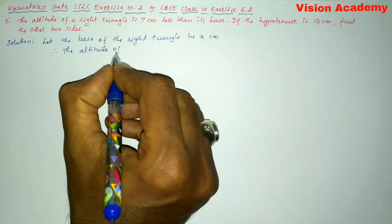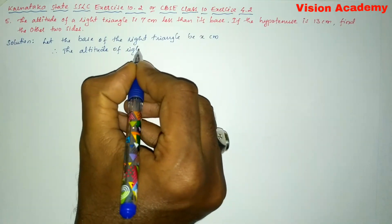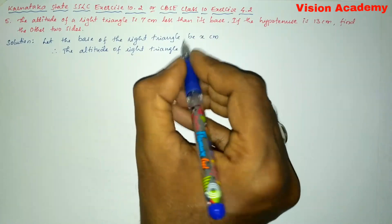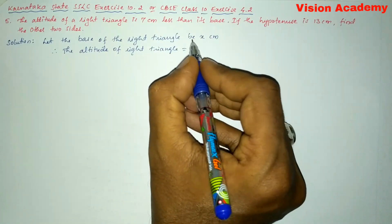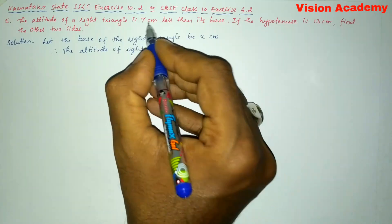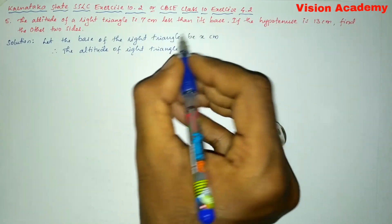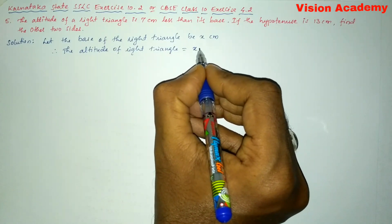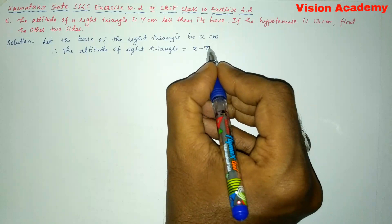of the right triangle is equal to, here they have given the altitude of right triangle is 7 cm less than its base. So here base we have taken as x, less than 7 means x minus 7 cm.